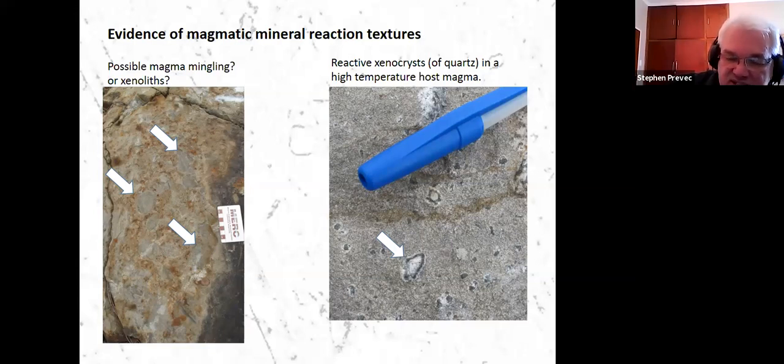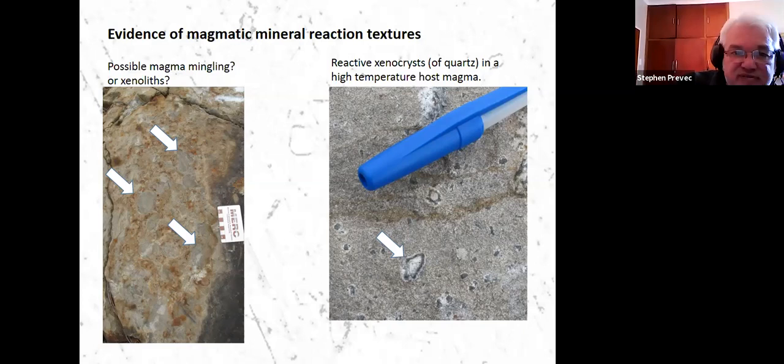And these are titanium rims on the quartz, which is thought to be a thermal response to being incorporated. It's believed that these xenocrysts though are actually from the country rock and not from another magma. So these are probably not evidence for magma mingling, but it's the type of texture one would be looking for.